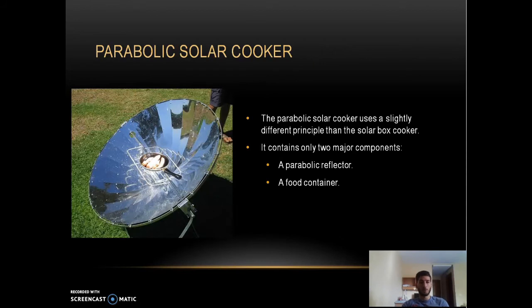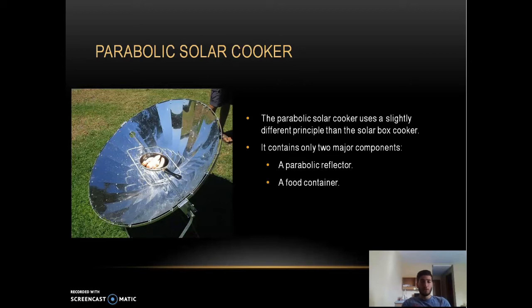The parabolic solar cooker uses a slightly different principle — it does not create a greenhouse effect. Instead, it only reflects sun radiation directly into the pan or pot to create enough heat to cook food. It contains two major components: a parabolic reflector that catches and reflects sun rays, and a food container.